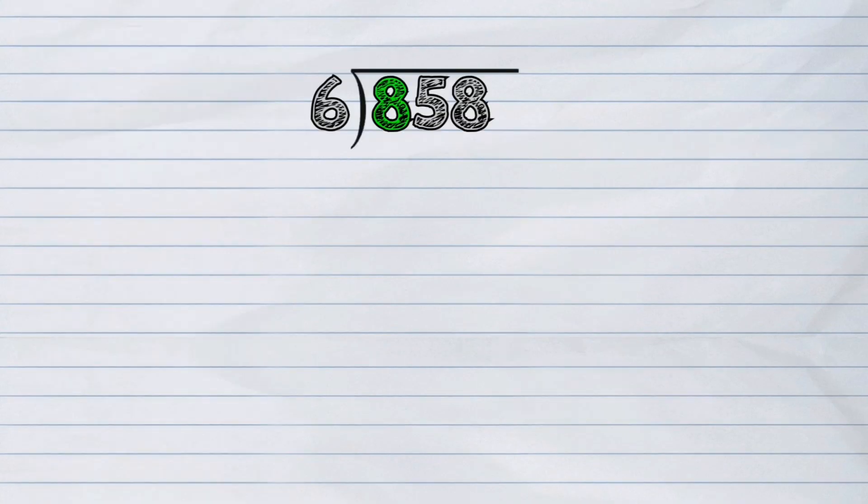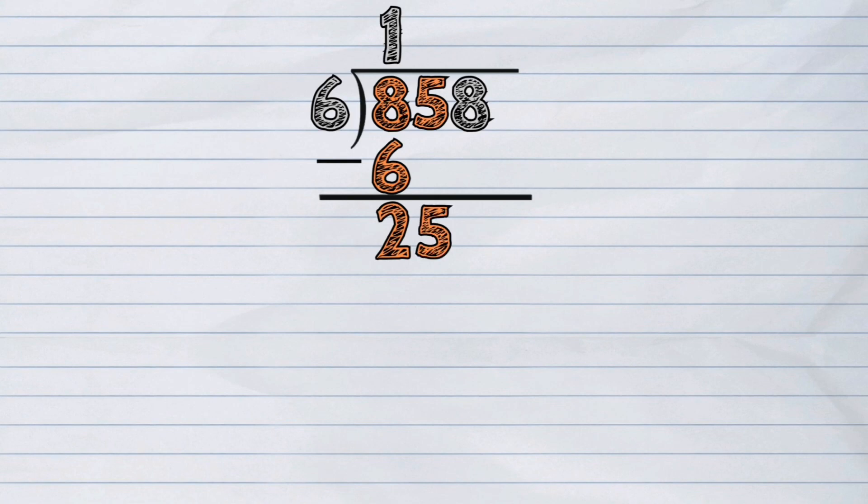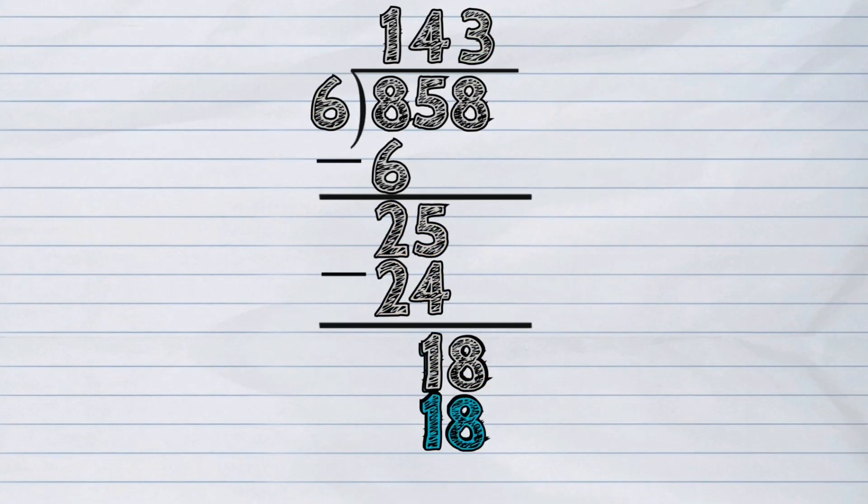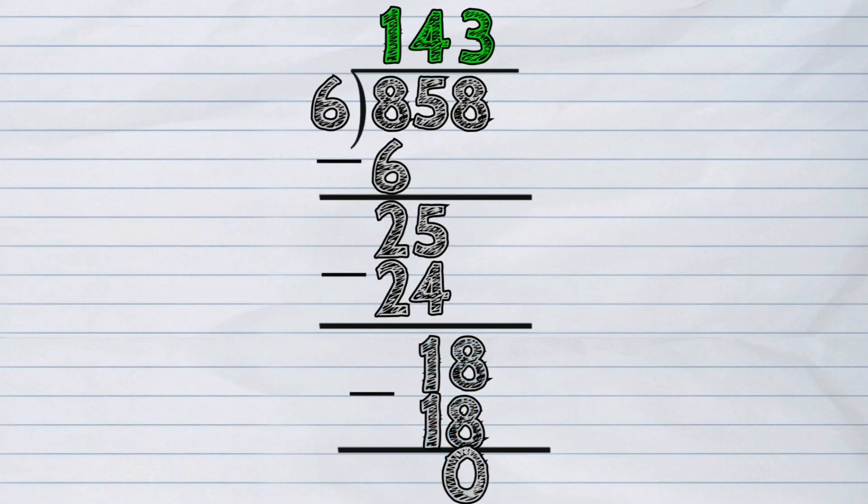And that was how we divide numbers without remainder. Do not forget that there are four steps involved in performing division: the DMSB - Divide, Multiply, Subtract, and Bring Down.